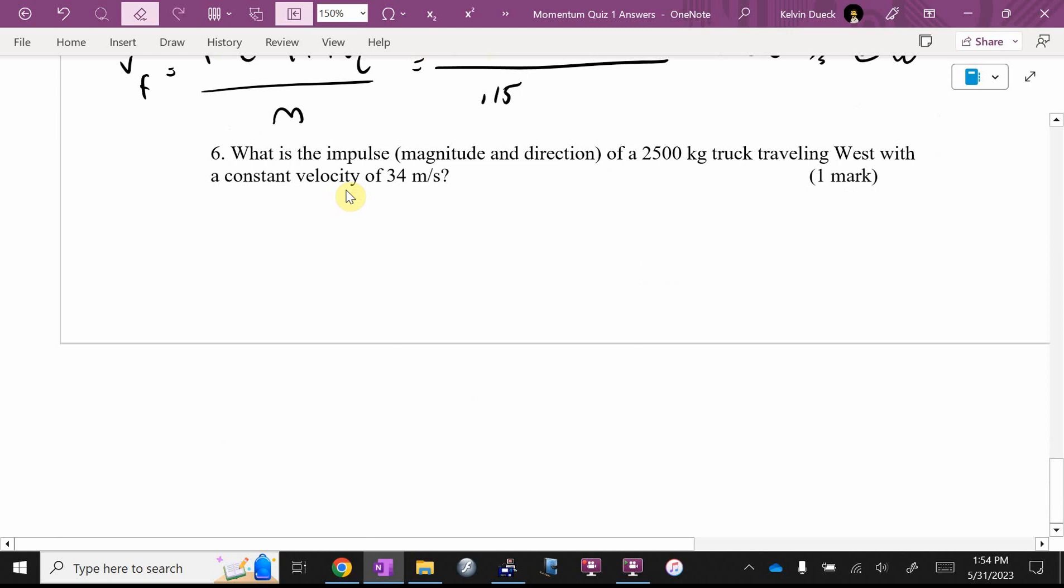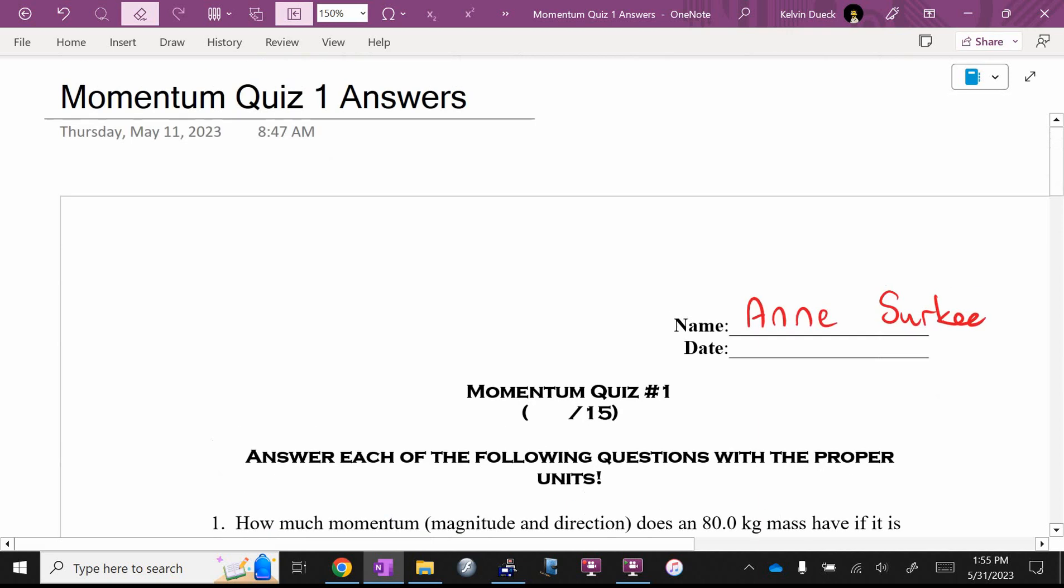Number six, what impulse, magnitude and direction, does a 2,500-kilogram truck have if it's traveling west with a constant velocity of 34 meters per second? Hannah, in your head. What? Why? Remember, impulse is a change in momentum. If you're going at a constant velocity, or the other way to think about it, impulse is force times time. If you're going at a constant velocity, what's the net force? So what's zero times time? Still, no impulse. Zero kilogram meters per second. If the answer is zero, I'm not as fussy if you don't put units. Can you give yourself a score out of 15?